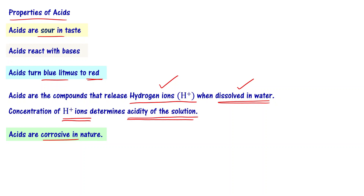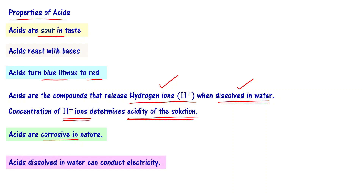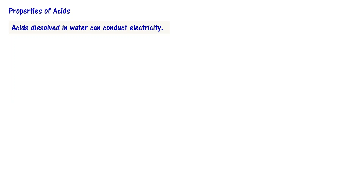One of the important properties of interest in this video is that when acids are dissolved in water, they can conduct electricity. To visualize this experimentally, let us prepare a solution of hydrochloric acid by mixing with water. When you make a dilute hydrochloric acid, you create a setup connecting electric wires, a bulb, and graphite rods dipped in HCl solution.